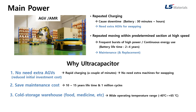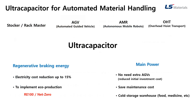And last, thanks to its wide operating temperature range, AGV can be installed in low-temperature warehouses for food and medicine storage. This is a brief recap of the presentation: two ways of using Ultra Capacitor — regenerative braking and main power.